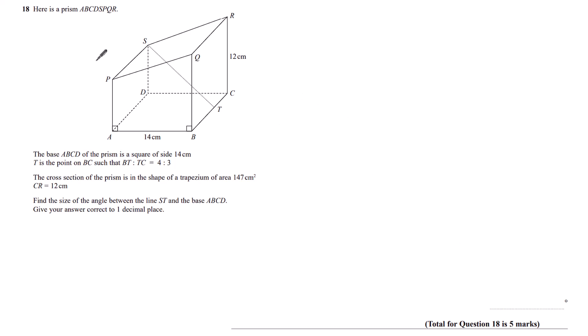Question 18. Here is a prism ABCDSPQR. The base ABCD of the prism is a square of side 14 centimeters. T is the point on BC such that BT to TC is 4 to 3.